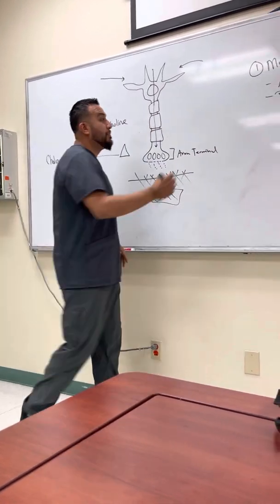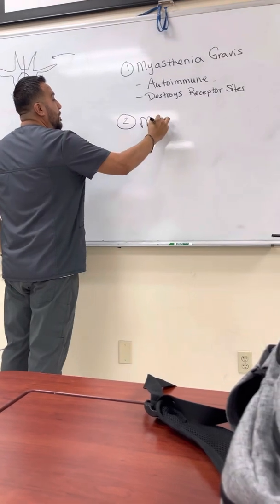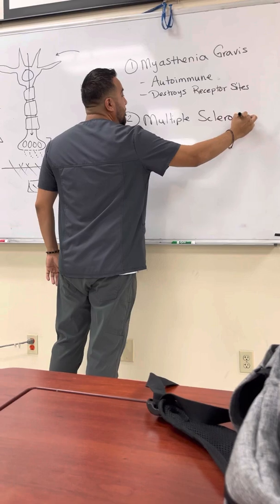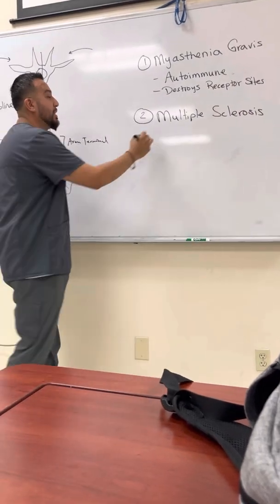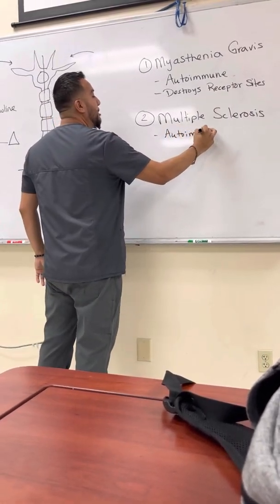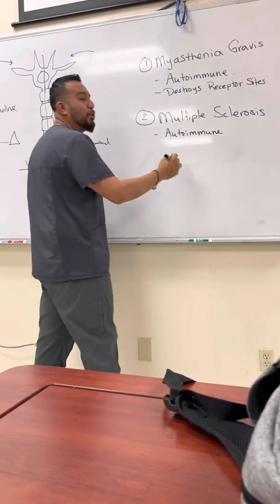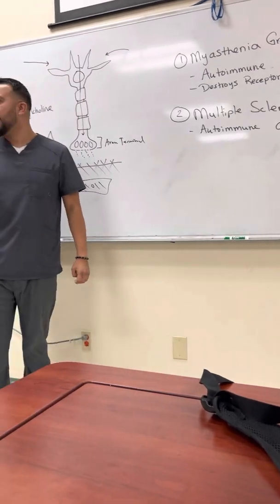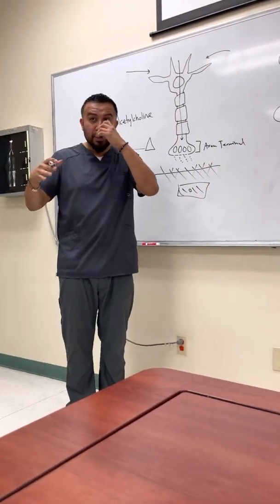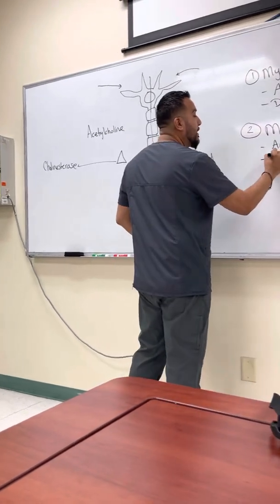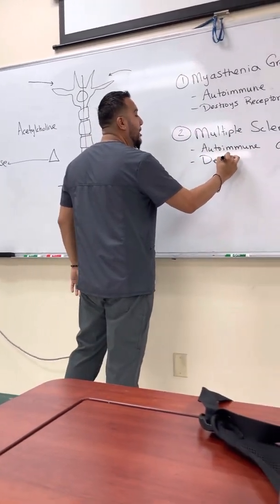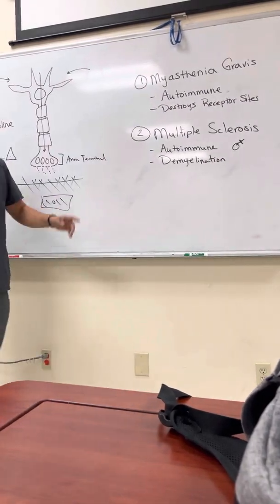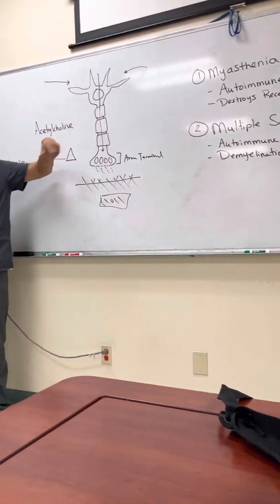We have another condition known as multiple sclerosis. In multiple sclerosis, it's also an autoimmune issue. It happens more to women than men, and it happens to them relatively young — in their 20s and 30s. There is demyelination of the myelin sheath, meaning these insulated components that are supposed to allow for electrical conduction to pass on through just fine are being destroyed.